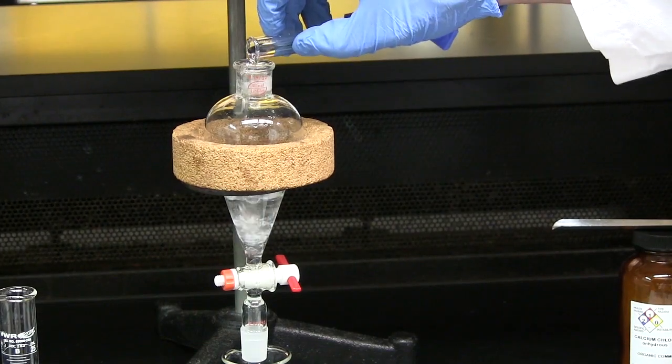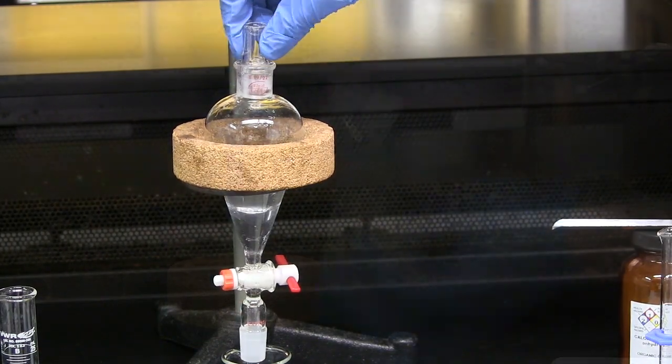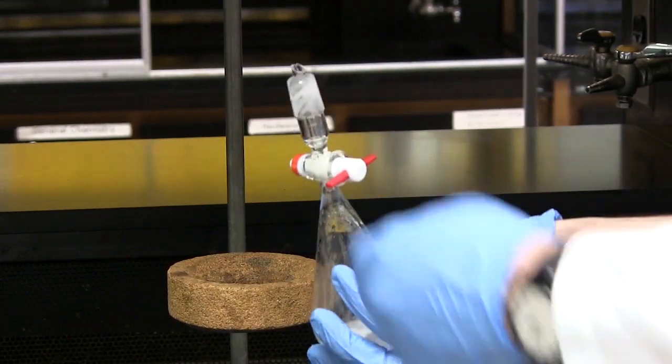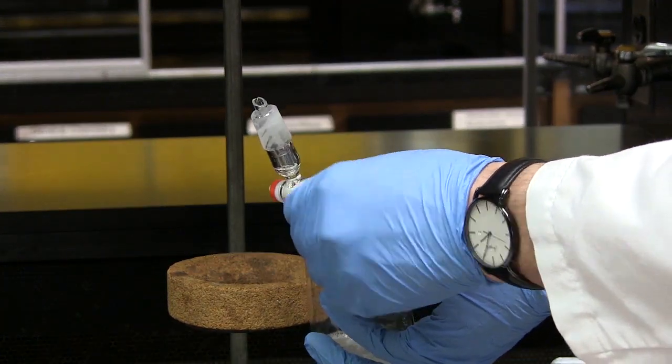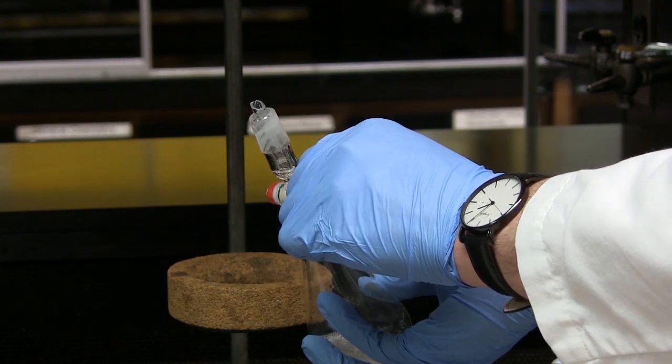Repeat the process with 10 ml of 5% sodium bicarbonate solution. Be sure to vent frequently to avoid pressure building up in the separatory funnel.